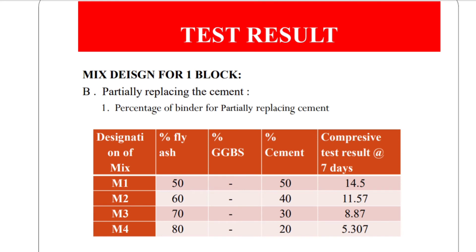Test results for partially replacing cement: with 50% fly ash and 50% cement, the compressive strength is 14.5 N/mm²; with 80% fly ash and 20% cement, the compressive strength is 5.3 N/mm². It is also observed that compressive strength decreases with increasing percentage of fly ash.